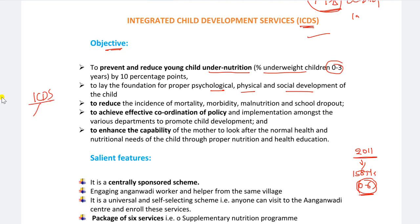ICDS level lo several programs are there. Services under ICDS like supplementary nutrition, preschool non-formal education, nutrition health education, immunization program, health checkups - and Pradhan Mantri Matru Vandana, SAG, adolescent girls course on scheme - these are the services and schemes under ICDS.